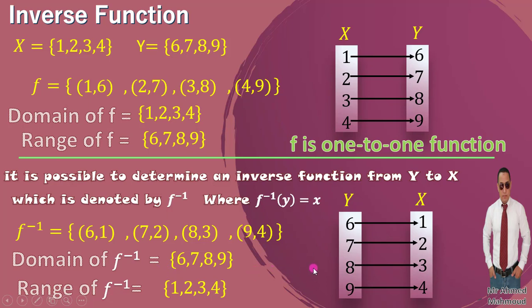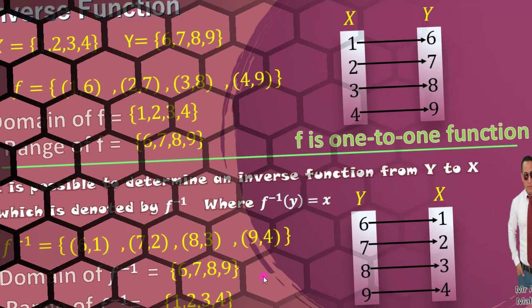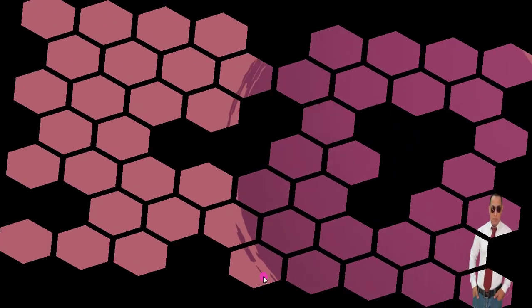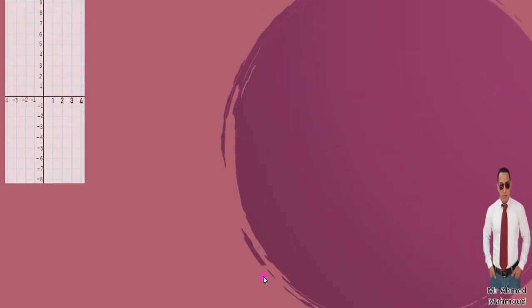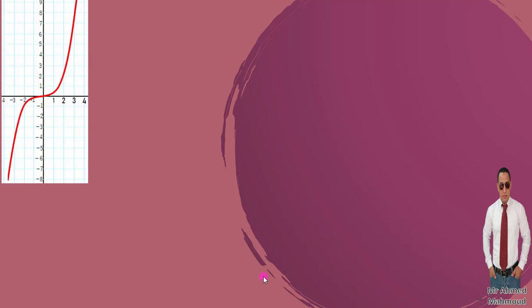So we switch the roles, and we switch the domain and range. Now let's understand the shape of the inverse function graphically. For example, given a function like this — if we apply the horizontal line test and the line intersects the function at only one point, then we call it a one-to-one function.